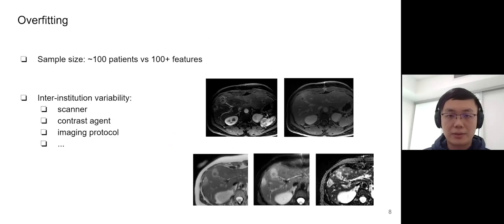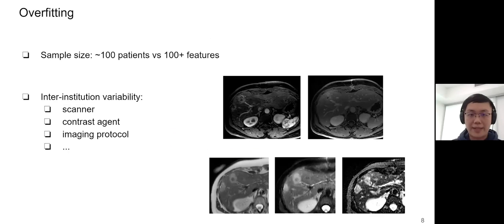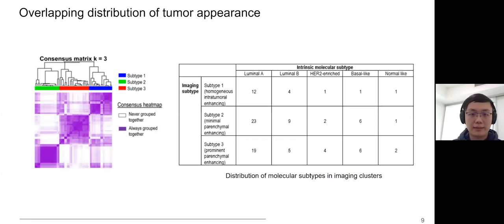The results look great, but there is a big issue in the analysis, and that is overfitting. During training, we introduced bias by selecting features associated with survival, and we evaluated hundreds of features when we only have 100 labels. Also, our signature probably won't work in other analyses because of the problem of inter-institution variability from the scanner, contrast agent, and imaging protocol we used. In short, there is not enough data for training a non-overfitting supervised prediction model. Another problem is the overlapping distribution of tumor appearance.